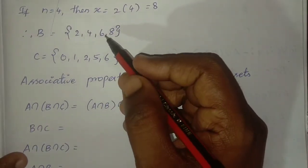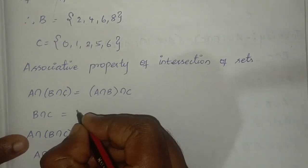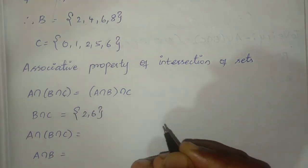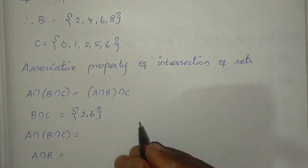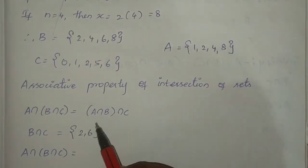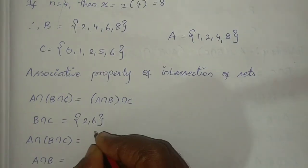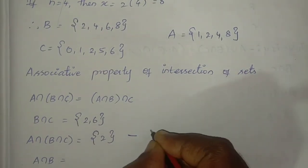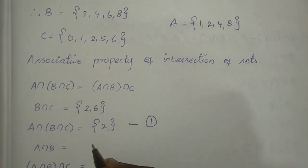Find common elements between A and B. Comparing A={1,2,4,8} and B={2,4,6,8}: common elements are 2, 4, and 8. So A intersection B equals {2, 4, 8}.